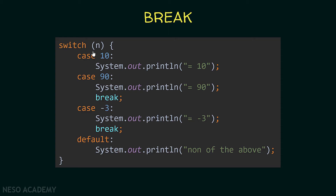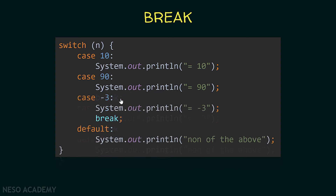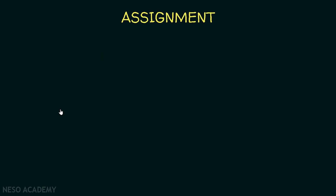Now let's see more examples. Suppose that we have a break placed after case 90, but not at the end of case 10. If n is equal to 10, case 10 will be executed, we will print 'equals 10', and we will continue executing case 90 because we didn't put a break at the end of case 10. So we will also print 'equals 90' and then we will break. Another example: suppose the break is placed only after case minus 3 and n is equal to 10 — we will print 'equals 10', 'equals 90', 'equals minus 3', and then stop.